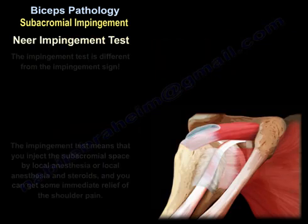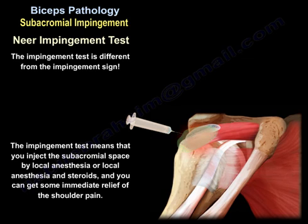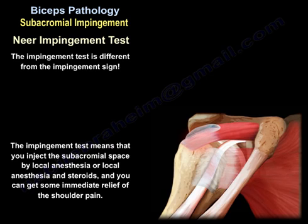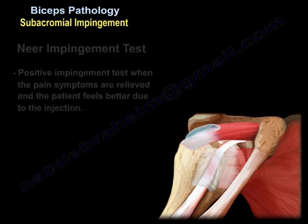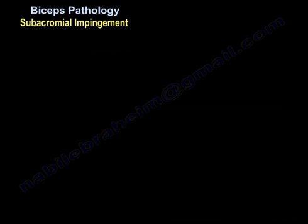The impingement test is different from the impingement sign. The Neer impingement test means you inject the subacromial space with local anesthesia, or local anesthesia and steroids, and you can get some immediate relief of the shoulder pain. It is a positive impingement test when the pain symptoms are relieved and the patient feels better due to the injection.